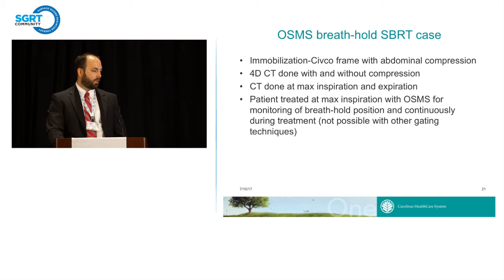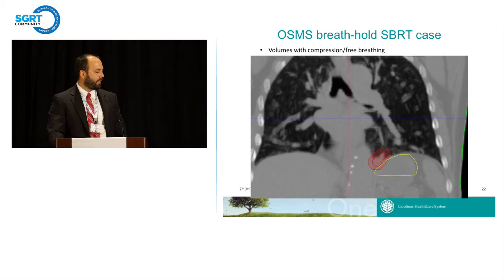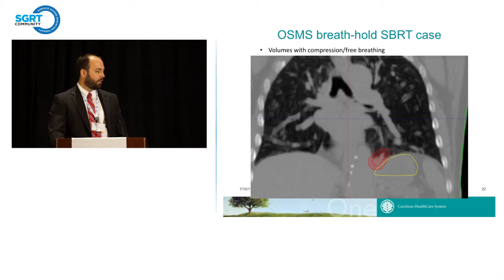This patient was set up in our standard mobilization. We did abdominal compression and acquired a 4D CT with and without compression, plus additional CTs at max inspiration and expiration, to determine the best treatment technique. We found that the max inspiration phase was best for treatment with the least risk of toxicity. Looking at volumes with compression and free breathing — the inner line is the ITV and the outer line is the PTV — with compression the motion was reduced quite a bit, but we had to treat the tumor over the entire respiratory cycle, and the superior-inferior volume was going to be much larger than with breath hold.